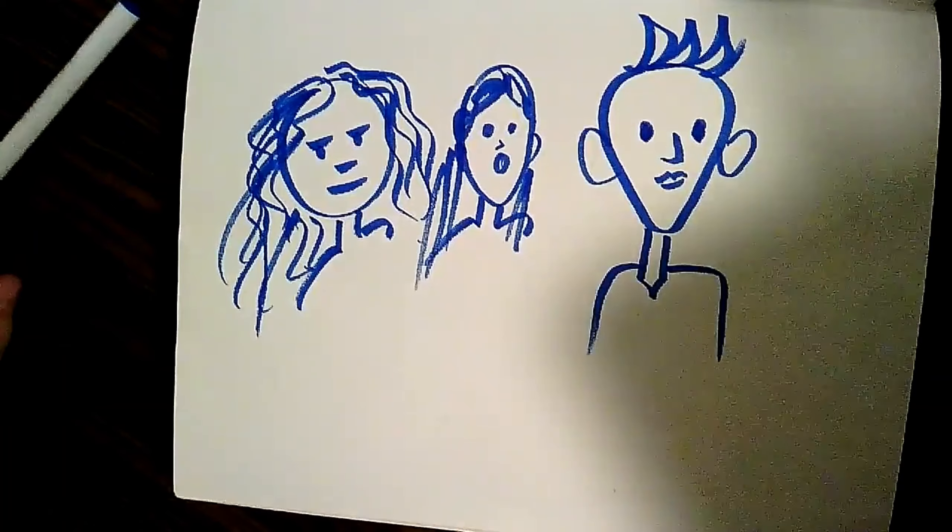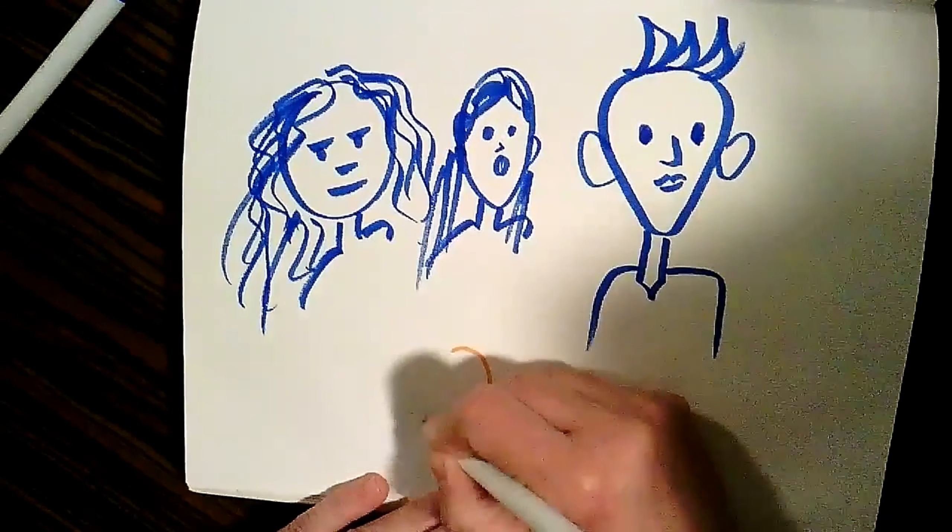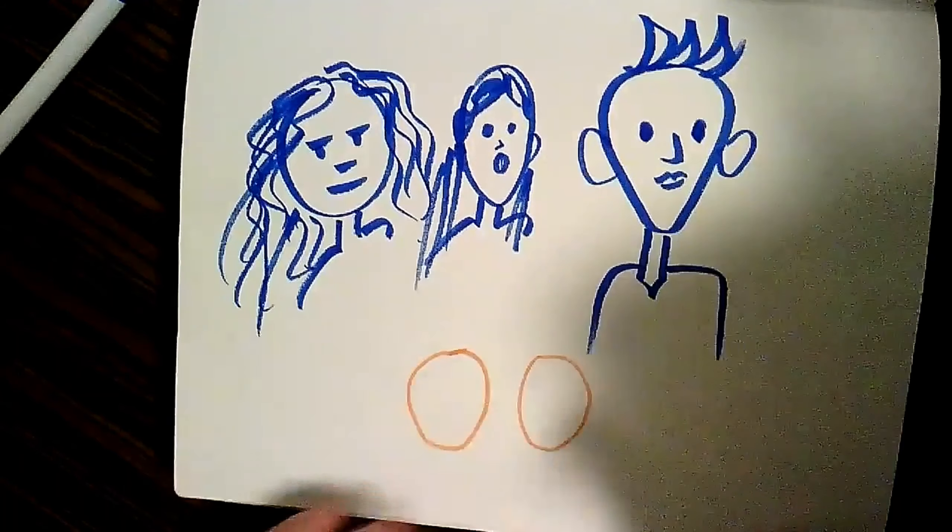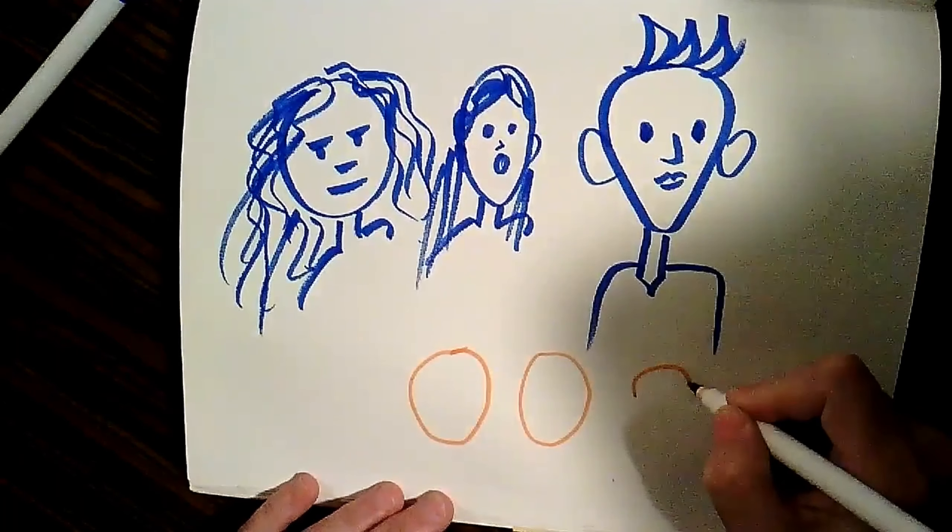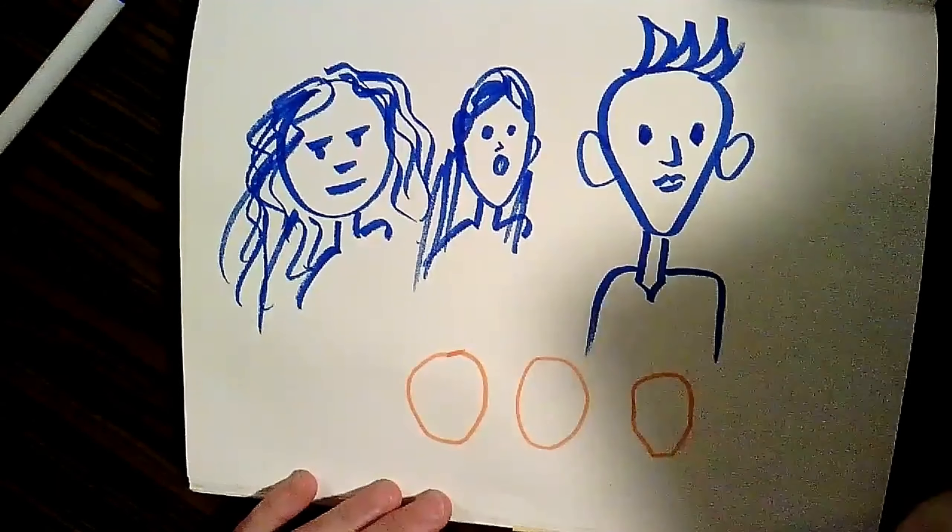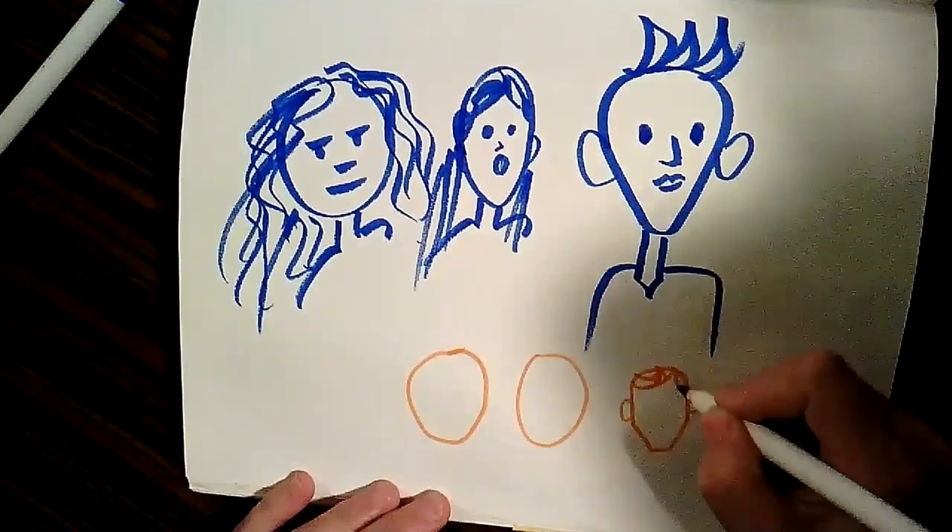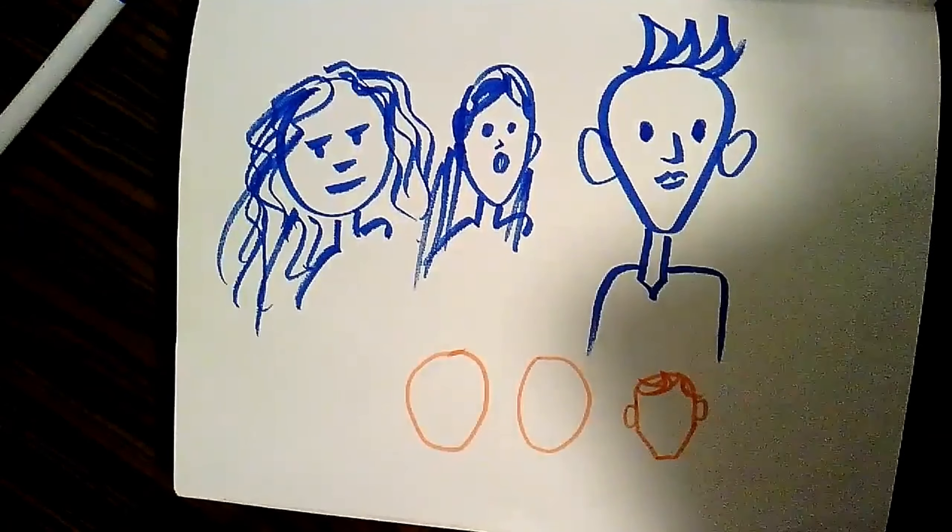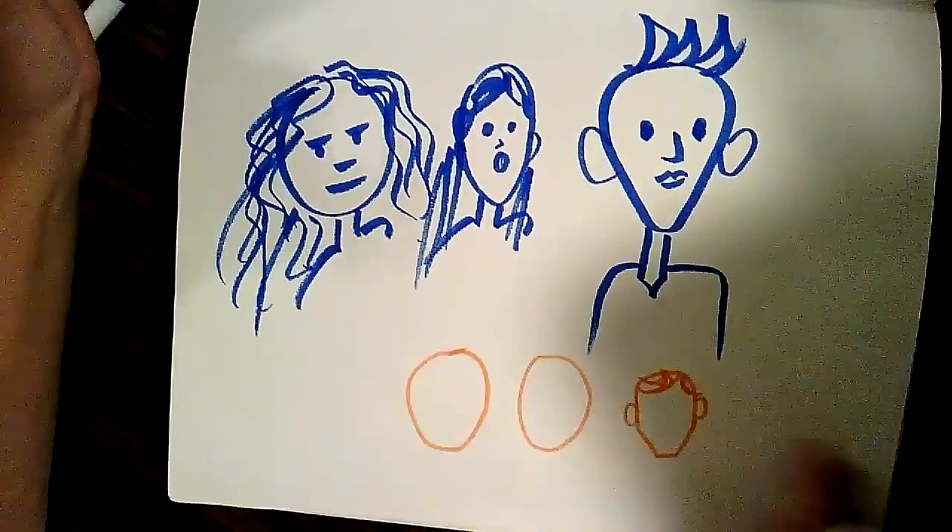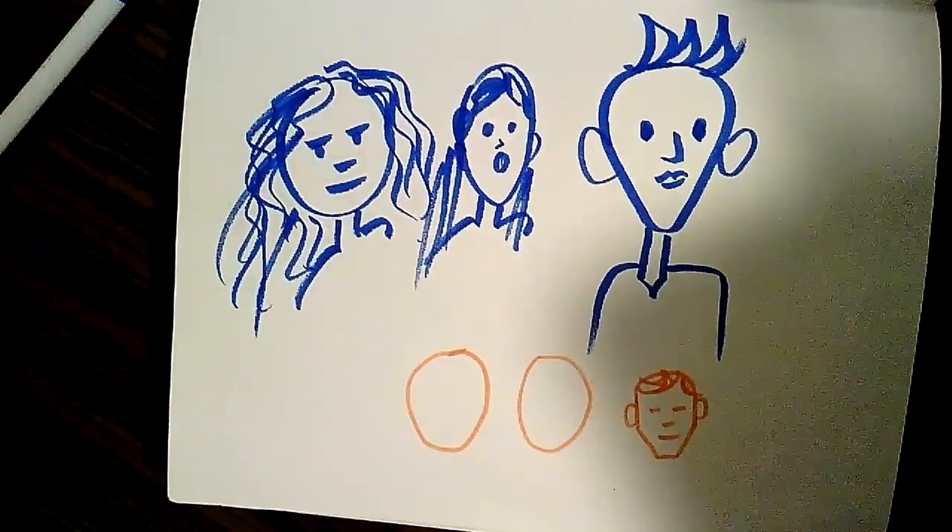So the next step I might want to look at is more realistic color for me. Maybe I'm thinking more orange. Maybe I'm thinking I want more the shape of a real head like with a forehead and sides of the face and the jaw and the chin.